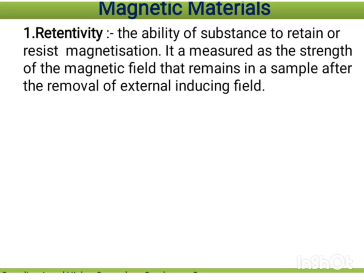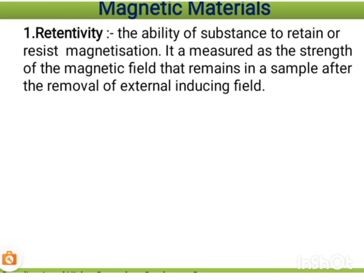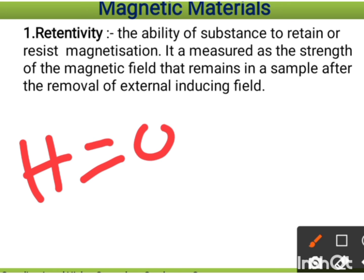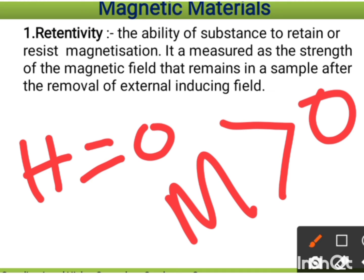Retentivity is the ability of a substance to retain or resist magnetization. It is measured as the strength of the magnetic field that remains in the sample even after the removal of the external inducing field. So even when the applied magnetization is zero, the material will still have some magnetic field — that is retentivity.